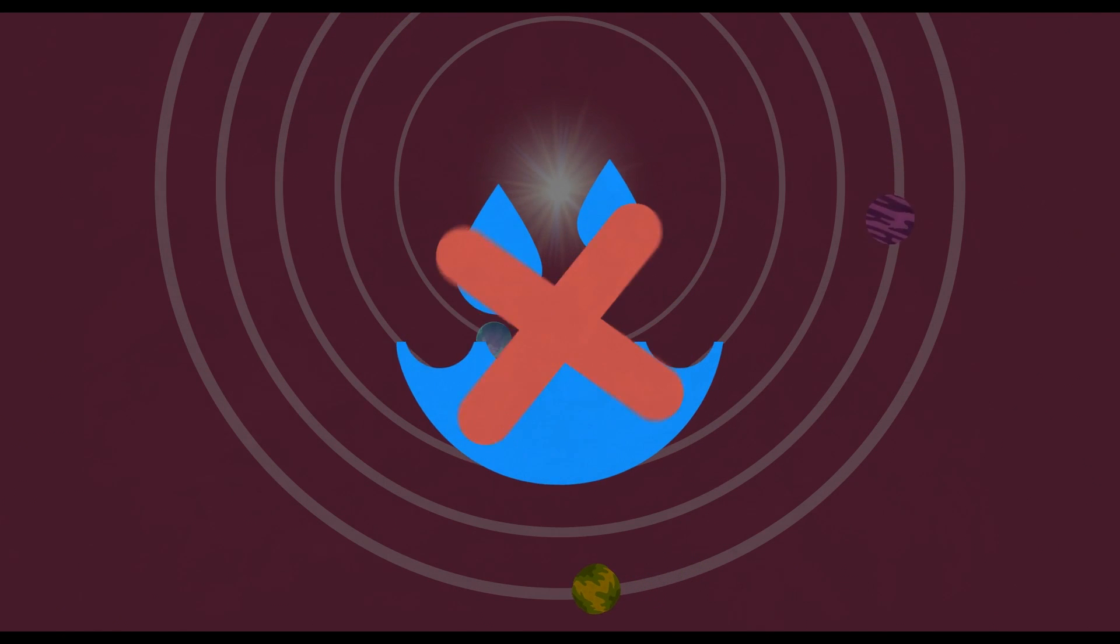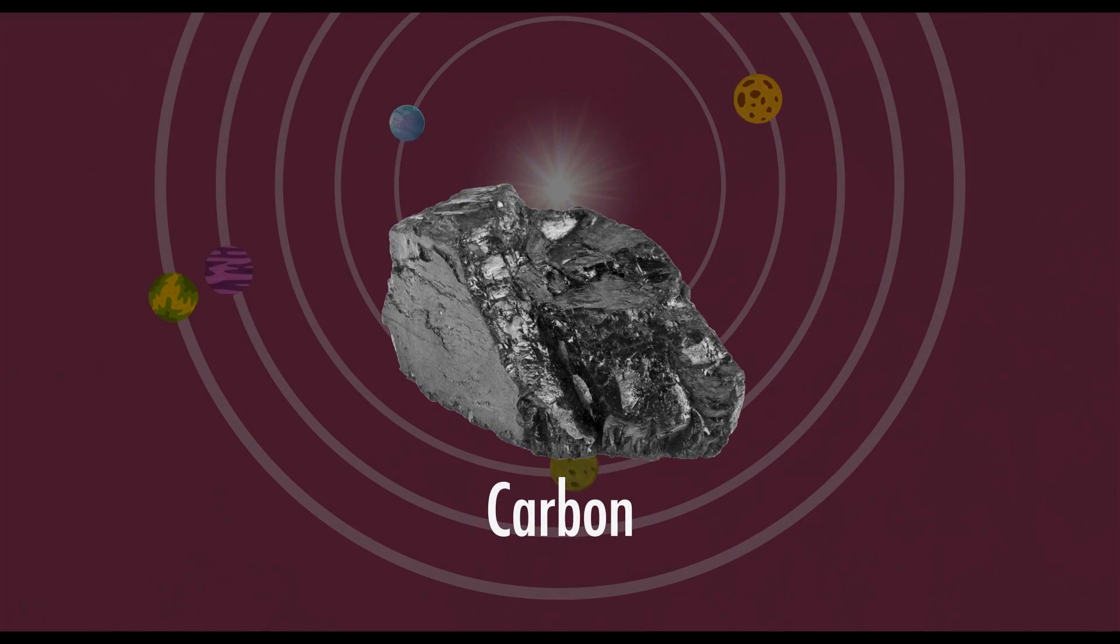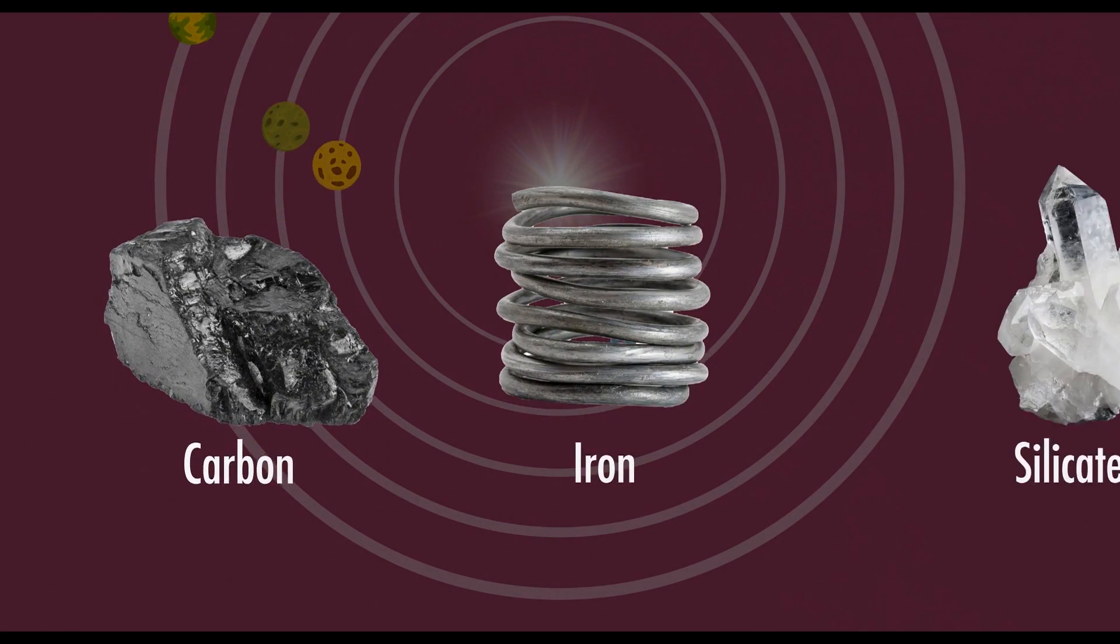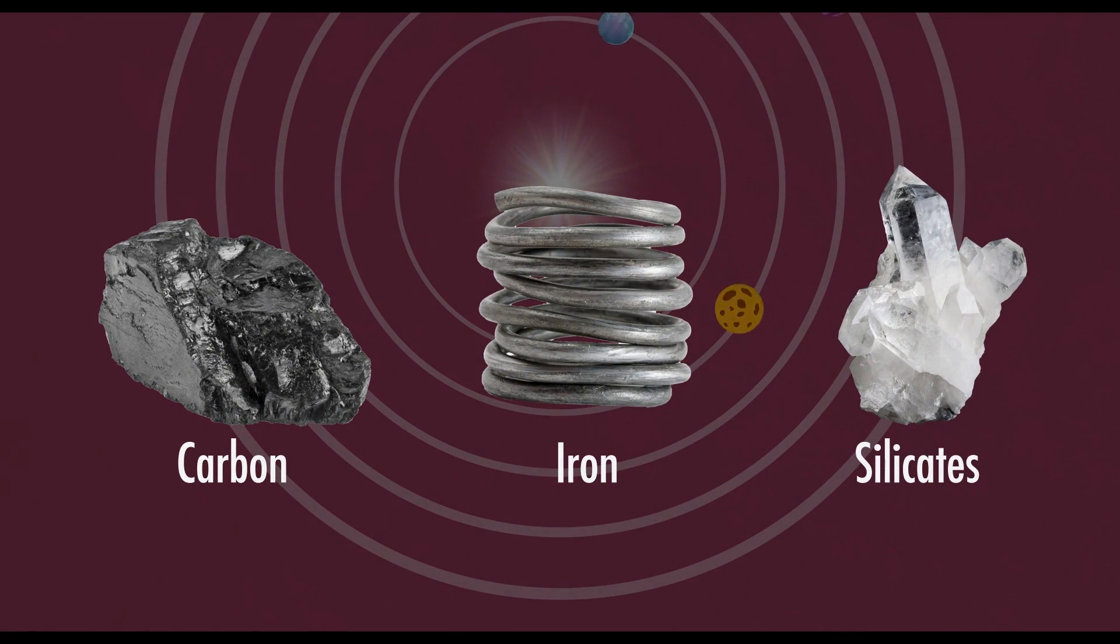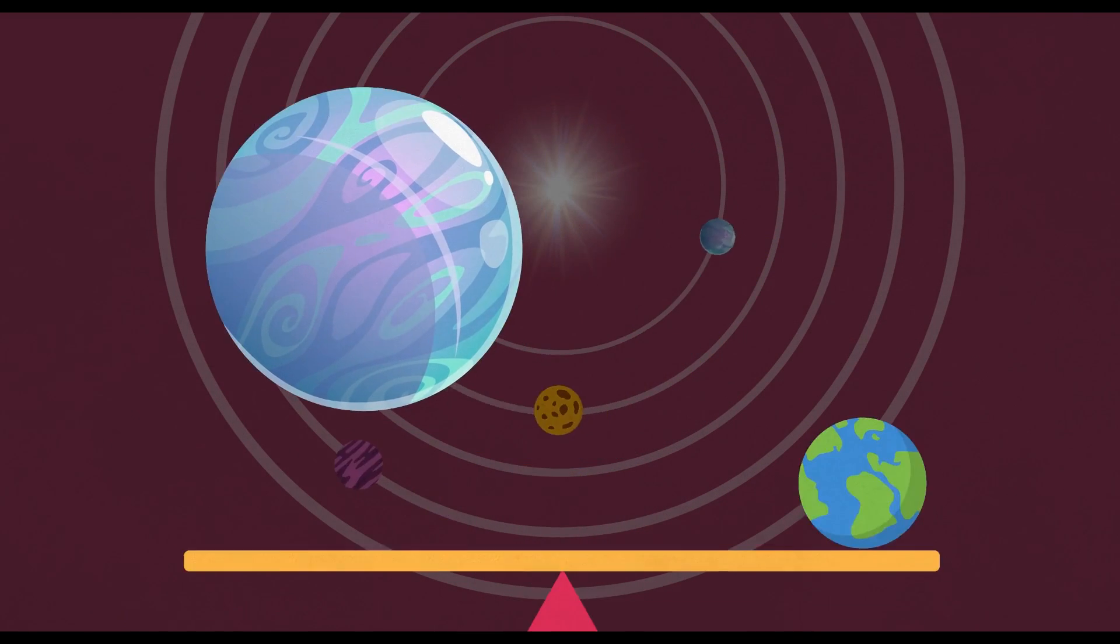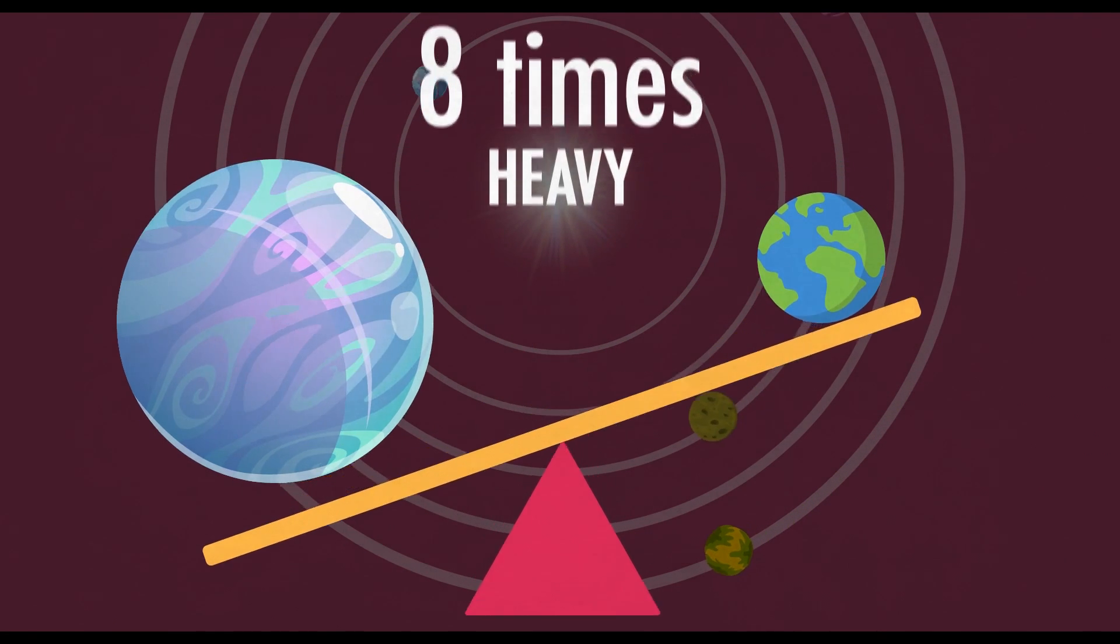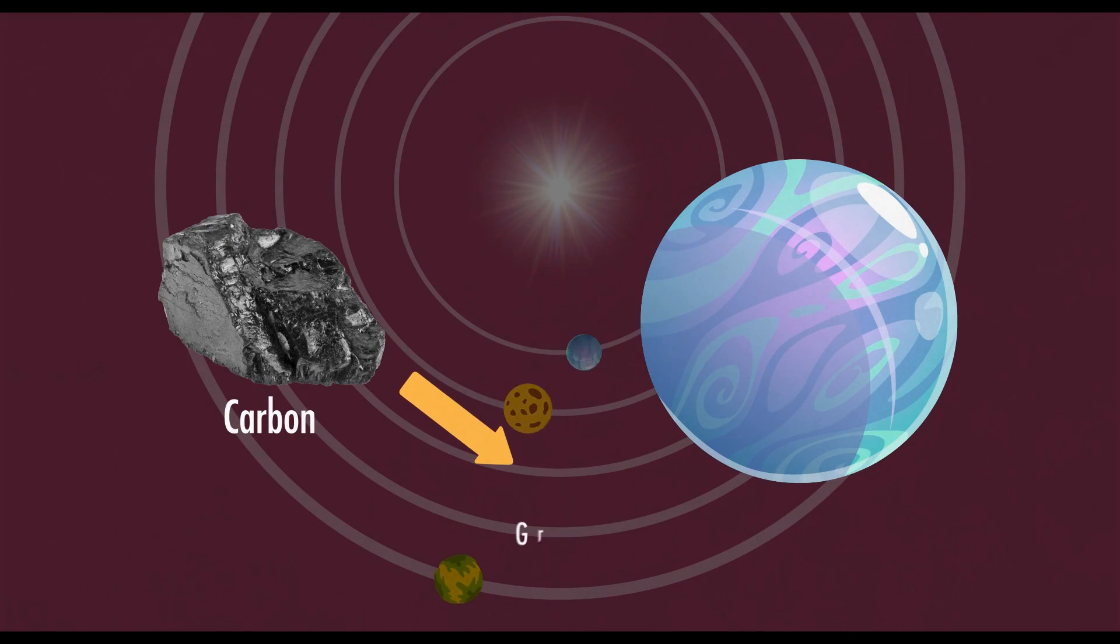There doesn't seem to be any water present, and apart from the carbon, the rest of 55 Cancri e appears to be made from iron and silicates, both of which are also common in the Earth's crust. This composition suggests that the planet, whose radius is double that of Earth's, is more than eight times as heavy as our own planet. The carbon is thought to exist in various states, including graphite.